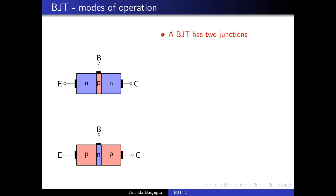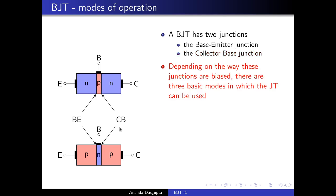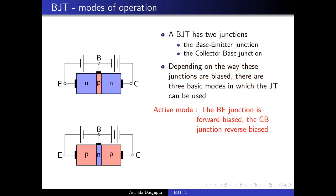Now, let us talk about the way in which a BJT works. A BJT has two junctions — there are three layers and two junctions in between. There is a base-emitter junction and a collector-base junction. Depending on how you bias these junctions, there are three basic modes in which the BJT can be used. The most common mode when using the transistor as an amplifier is the active mode.